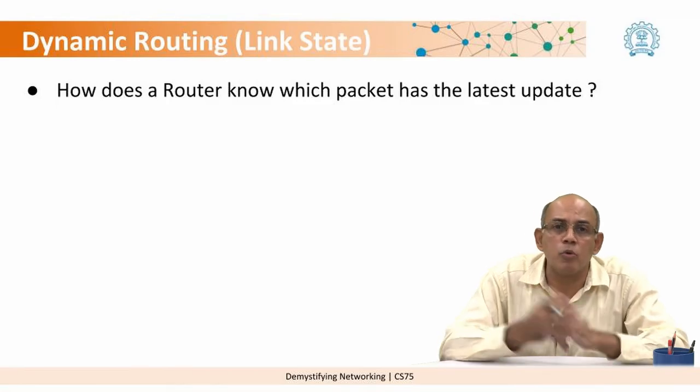The next question is: what if there are two packets containing different information about the same link between routers A and B? For example, the link between A and B might have been up with a cost of 1, so a link state packet AB1 was constructed. Then the link went down, and later came back up — perhaps with a different cost — generating yet another link state packet. When a router receives these packets, how does it know which is the most recent?